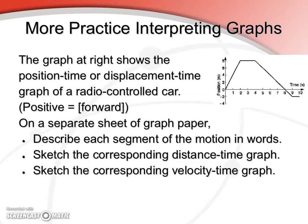Alright, so let's look at this displacement-time graph of a radio controlled car. We've got positive moving forward, negative moving back, of course. Go ahead and on a separate sheet of graph paper, describe each of the segments in words, and sketch the corresponding distance-time graph. Notice that it's distance-time, not displacement-time, so it won't look the same. And when you're finished, also sketch the velocity-time graph. Go ahead and pause the movie, please, and work on that.